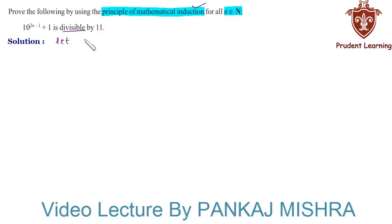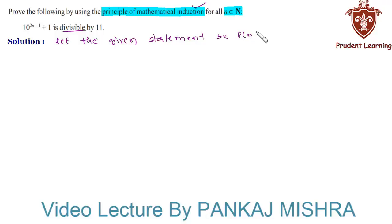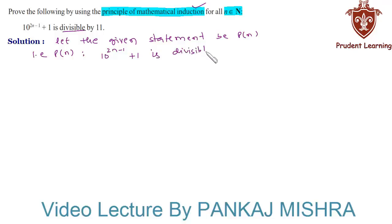Let the given statement be P(n), such that 10 raised to the power (2n minus 1) plus 1 is divisible by 11. In our first step, the verification step, we will check whether this statement holds true or not for n equal to 1.